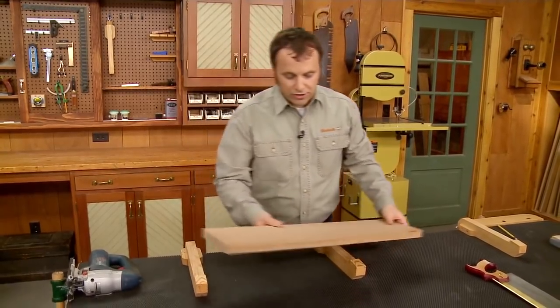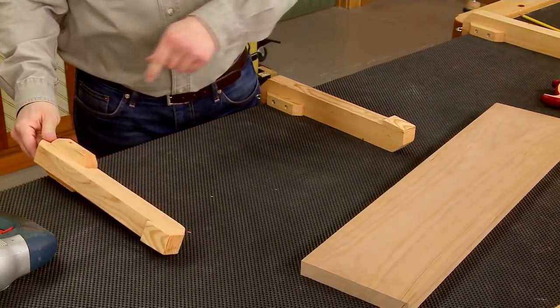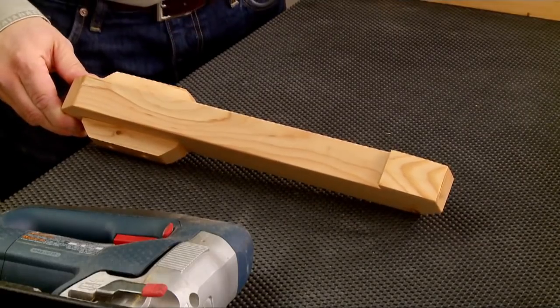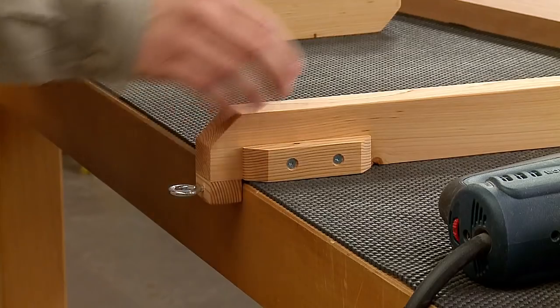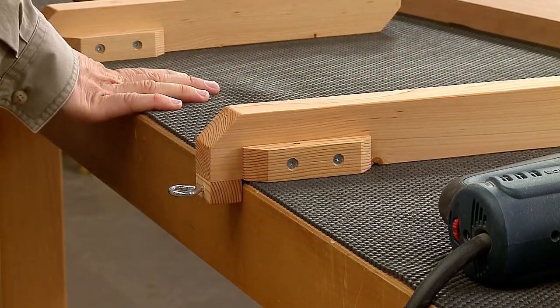Now there's one other piece on the bench hooks, and that's a set of blocks that I've screwed to the side, and they provide some extra stability so that the bench hook isn't going to wobble around.